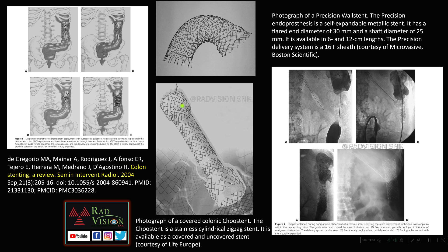Here you can see the photograph of the colonic Chew stent — a stainless steel cylindrical zigzag stent — and also the Precision wall stent. Under fluoroscopic guidance, the stent is placed at the level of the carcinoma or the narrowed carcinomatous area in the colon.